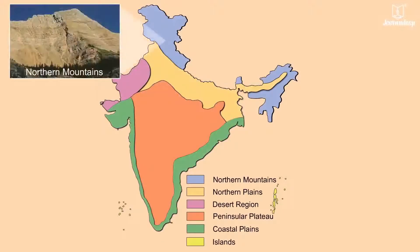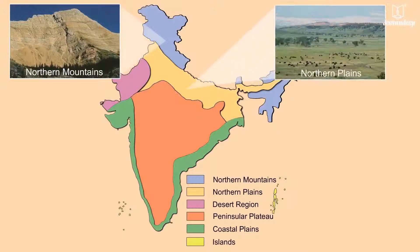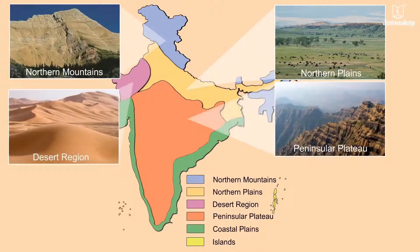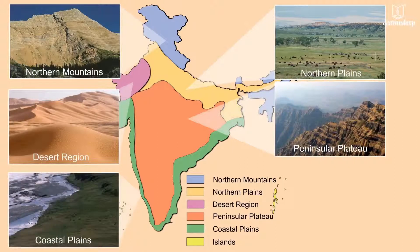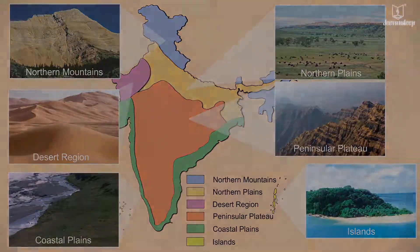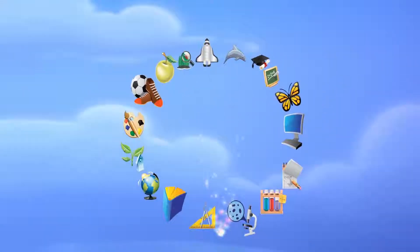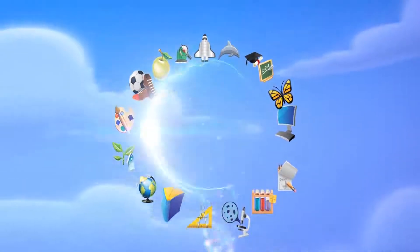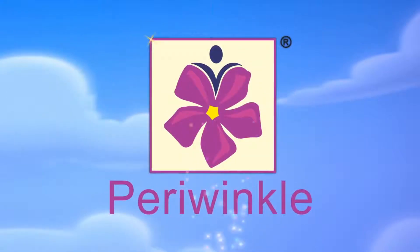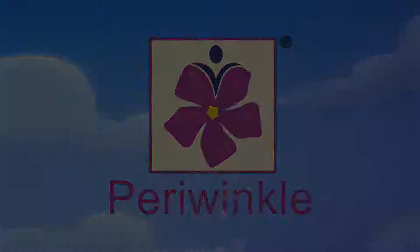The northern mountains, the northern plains, the desert region, the peninsular plateau, the coastal plains and the islands.